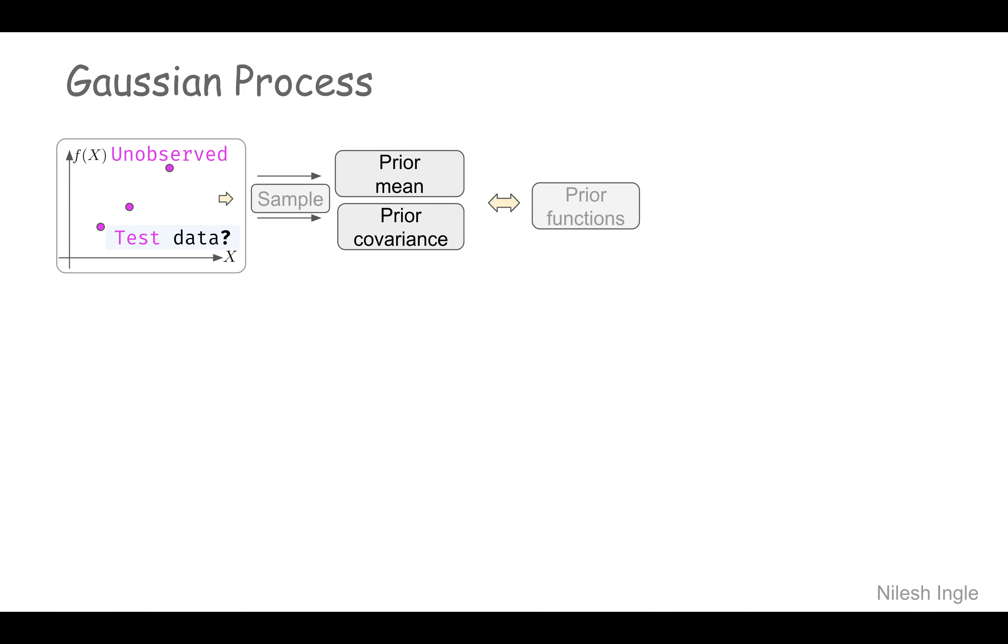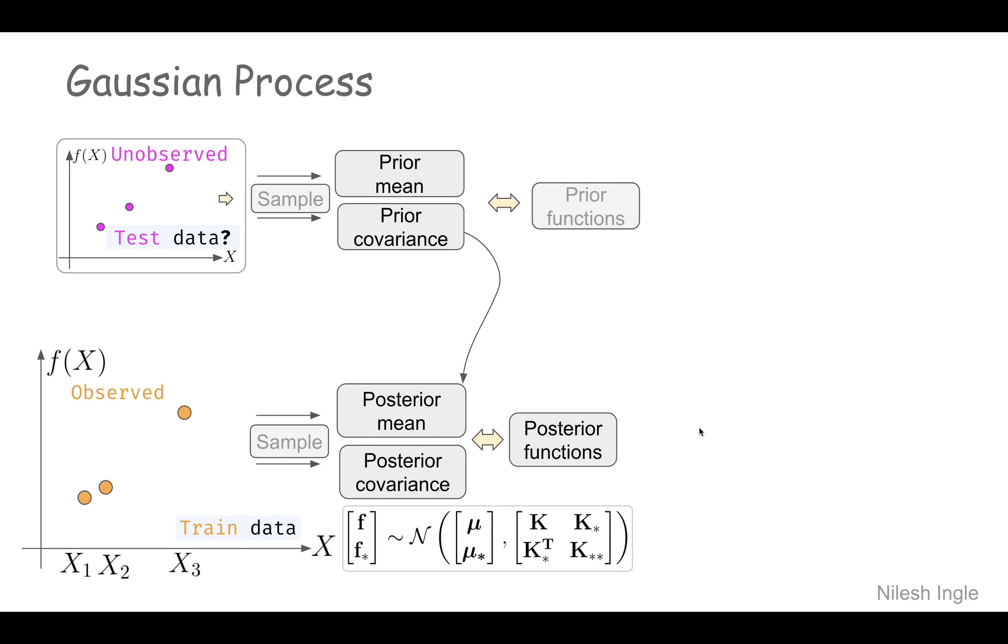A Gaussian process starts with finding the prior. So we are looking at the test data and we can sample that data to find a prior mean and covariance, and then use that covariance along with the covariance from the train data.